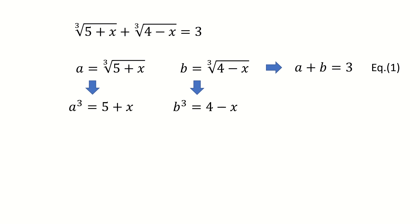Next, if we make the cube on both sides, we got a cube equal to 5 plus x, and b cube equal to 4 minus x. This is obvious. Next, we add them together. So we can eliminate x, and then we got a cube plus b cube equals to 9. And this is our equation two.